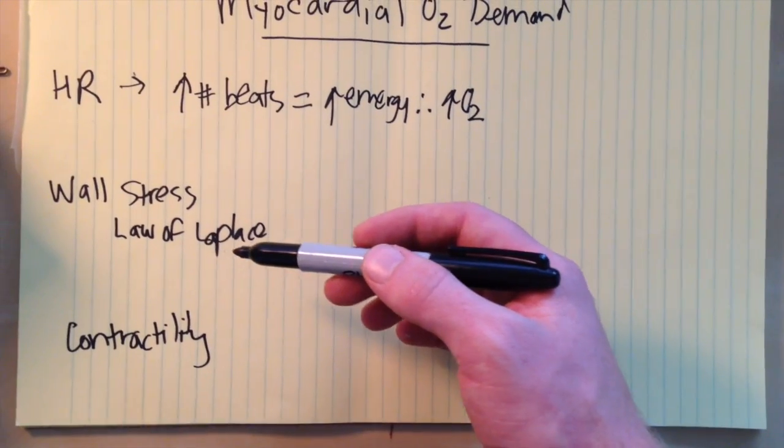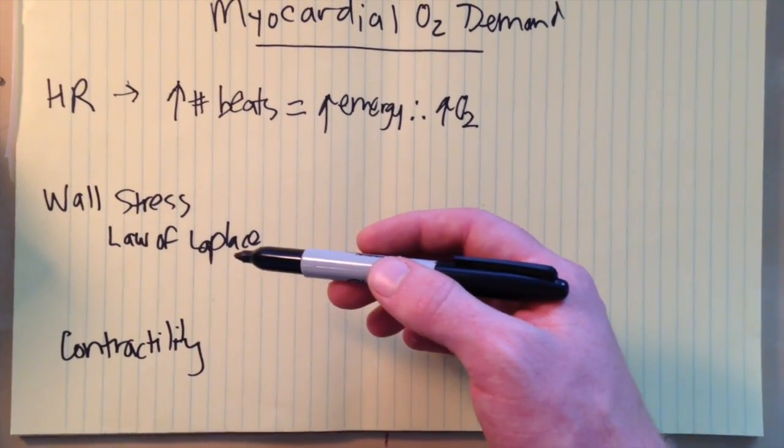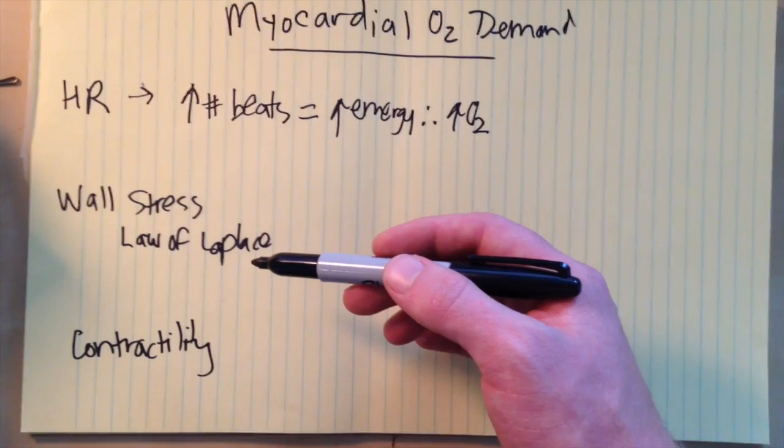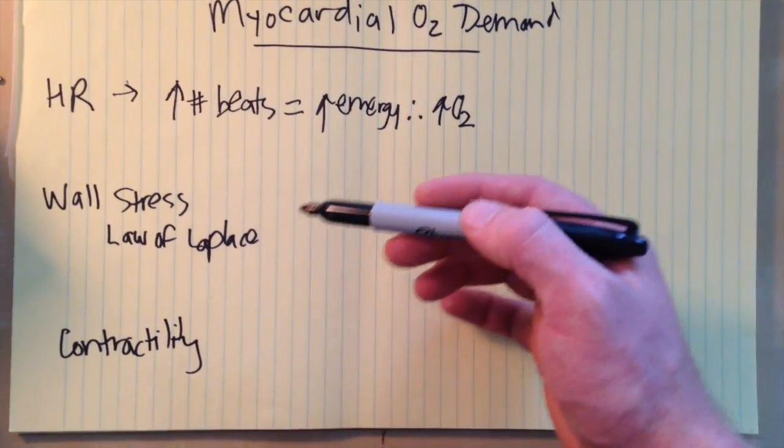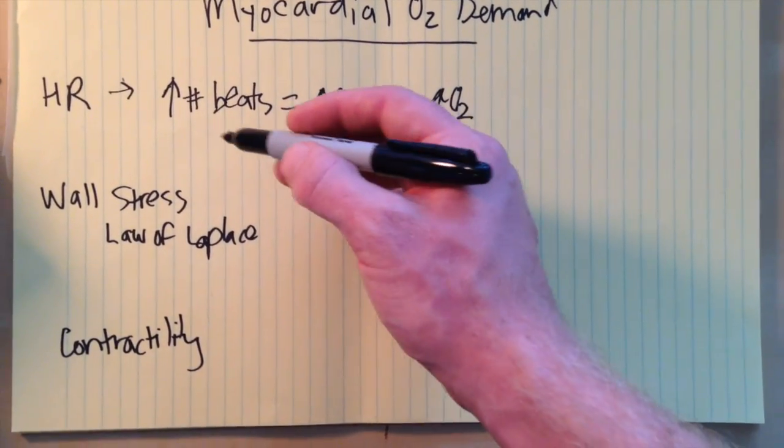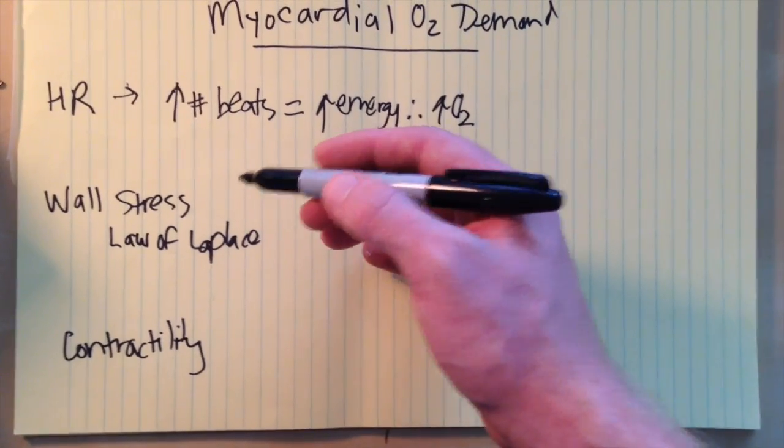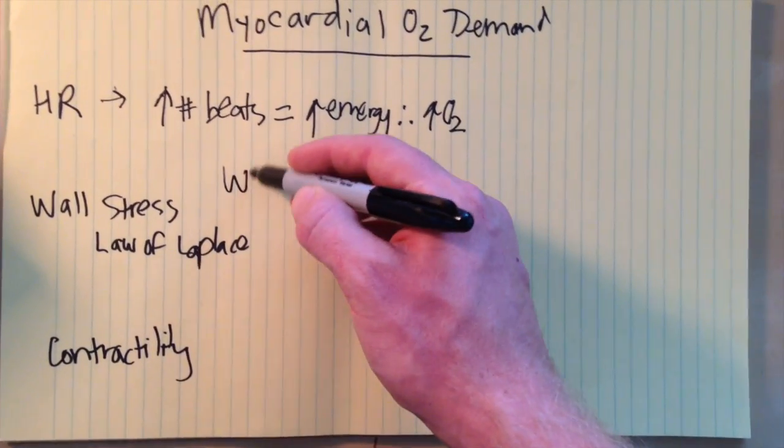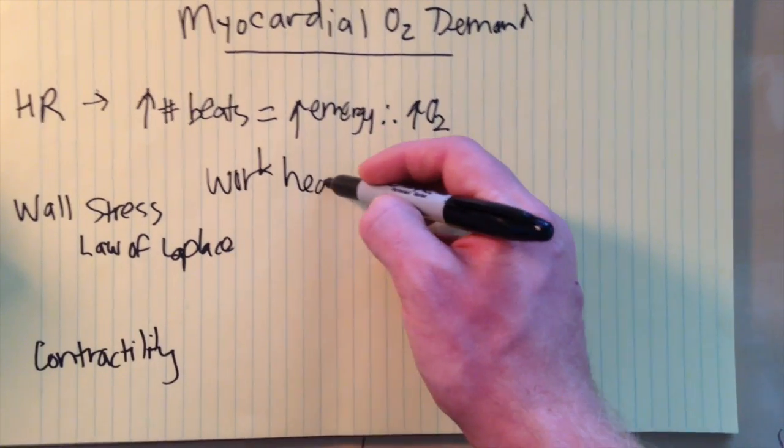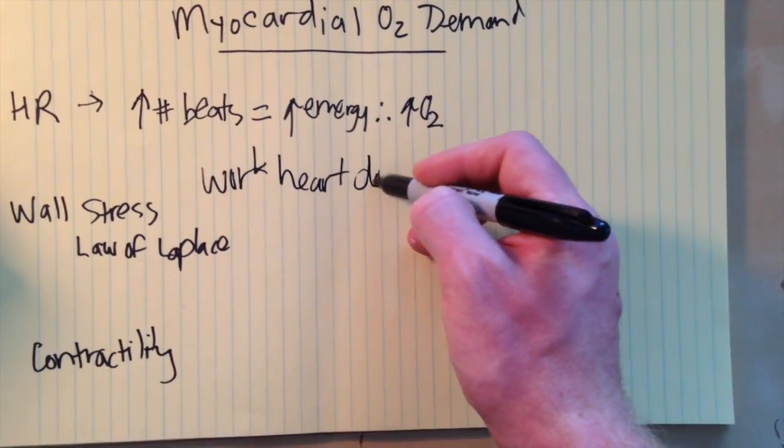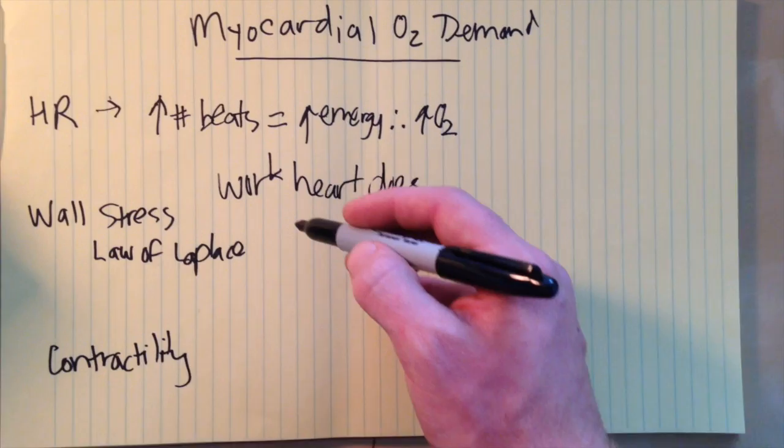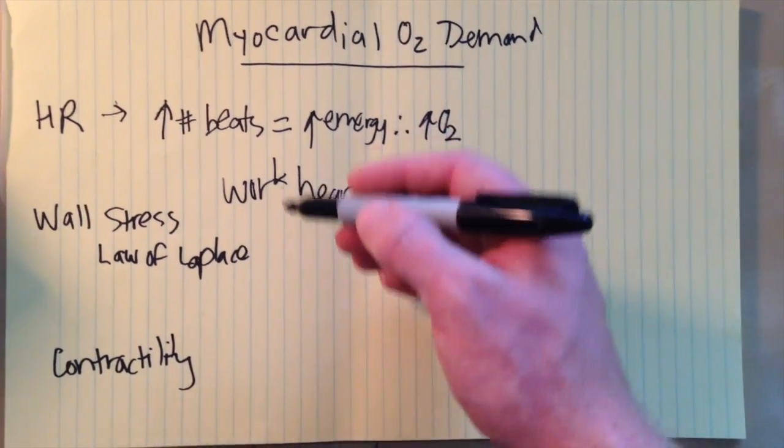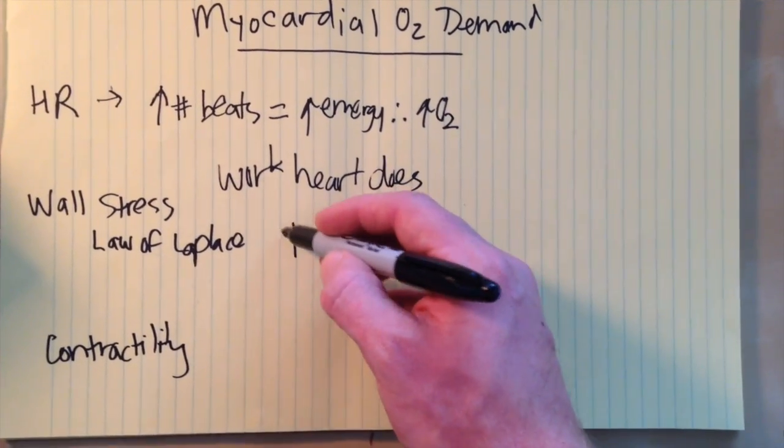The second factor is wall stress which is related to a principle called the law of Laplace. This is often hard to understand and somewhat confusing but you can boil it down to essentially saying that the wall stress is the work that the heart has to do to contract. There are several factors that make this work harder or easier. That's the wall stress.